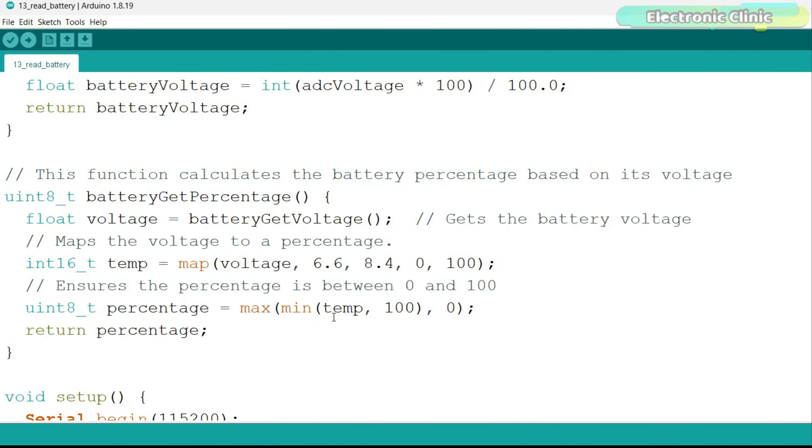If temp is less than 0, percentage will be set to 0. If temp is greater than 100, percentage will be set to 100. Otherwise, percentage will be set to the value of temp. You can read more about the min function and max functions in the article.